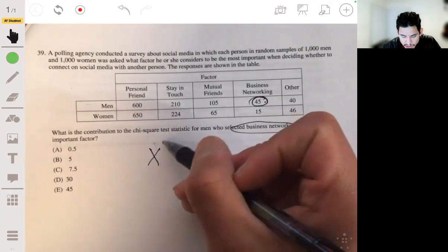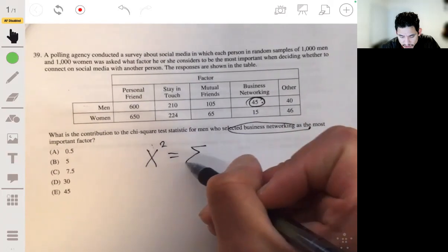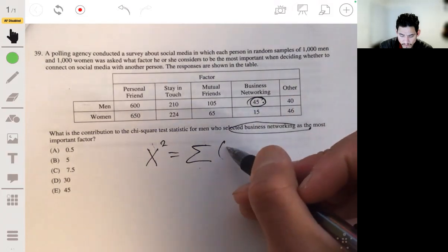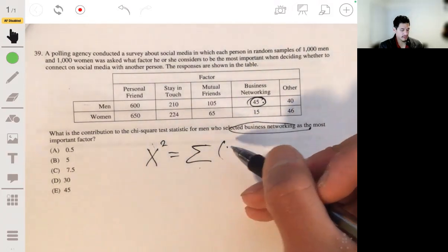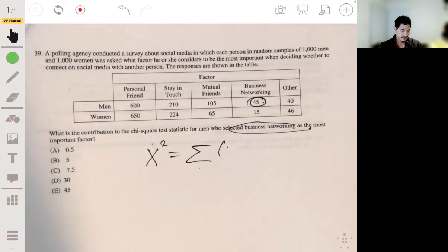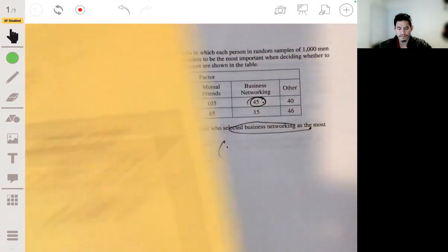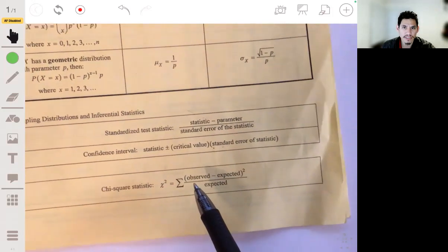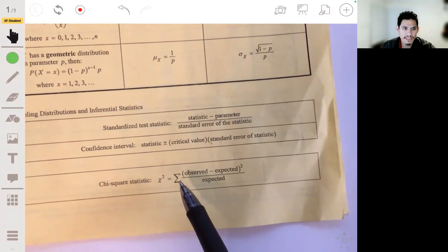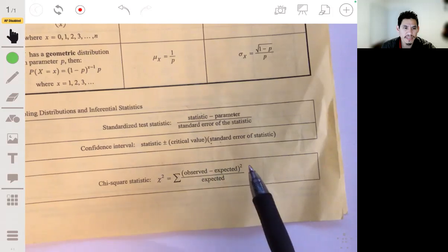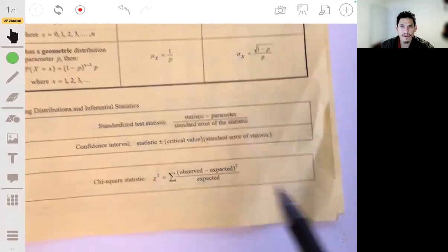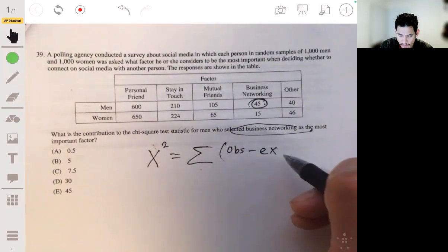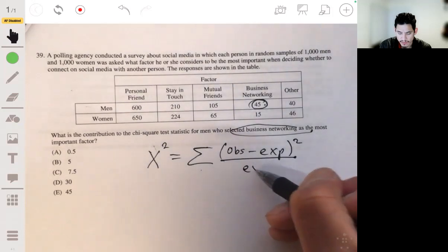So we're studying this group and business networking. And as you remember, the chi-square statistic is equal to the sum of... Let me just go to the formula sheet. It's given to you, don't worry about having to memorize these and forgetting. Chi-square statistic, the sum of the observed minus expected squared differences over the expected values. Observed minus expected squared over the expected.